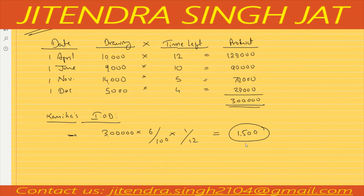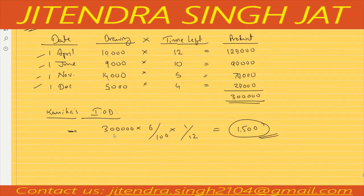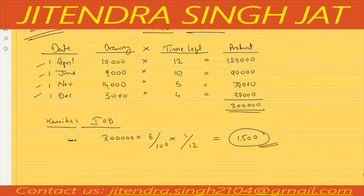The product method is used when the time interval is not uniform and the amount is also not uniform. In this case the total months (12 + 10 + 5 + 4 = 31) are already included in the product of 3 lakh, so we divide by 12 — it is not just for one month.